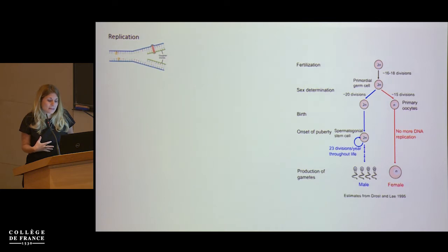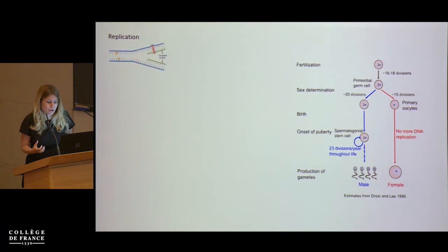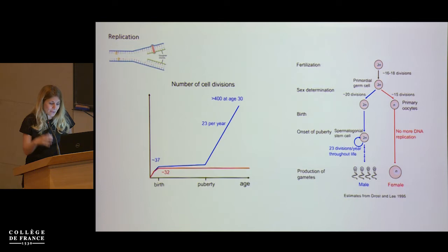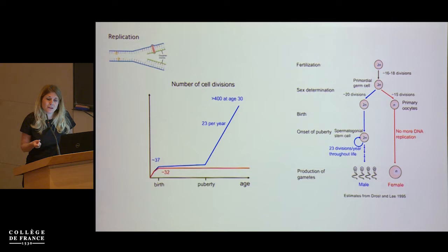In humans, after primordial germ cell specification, there are approximately 15 cell divisions leading to primary oocytes, which then remain in stasis with no further DNA replication until ovulation and fertilization. In contrast, males undergo maybe 20 or so cell divisions producing spermatogonial stem cells, which then undergo an estimated 23 cell divisions per year throughout the male lifespan. This means that by age 30, the male germ cell will have gone through an order of magnitude more cell divisions than the female germ cell.